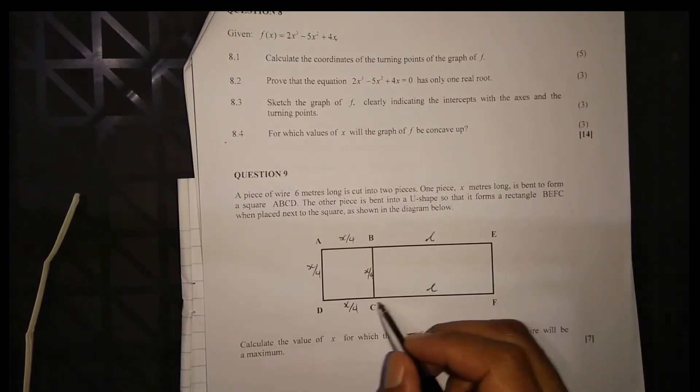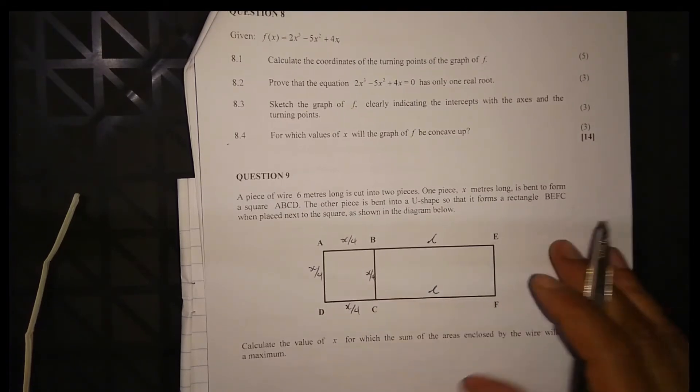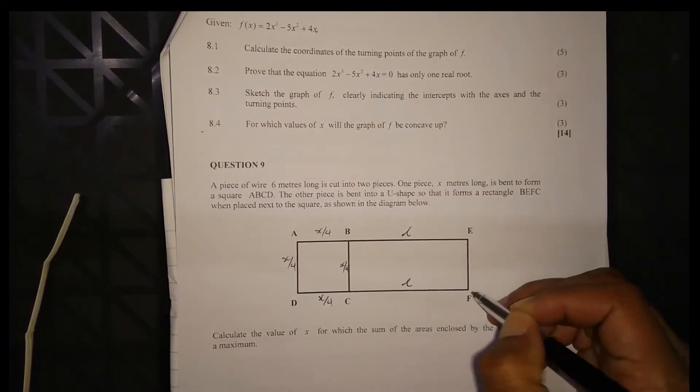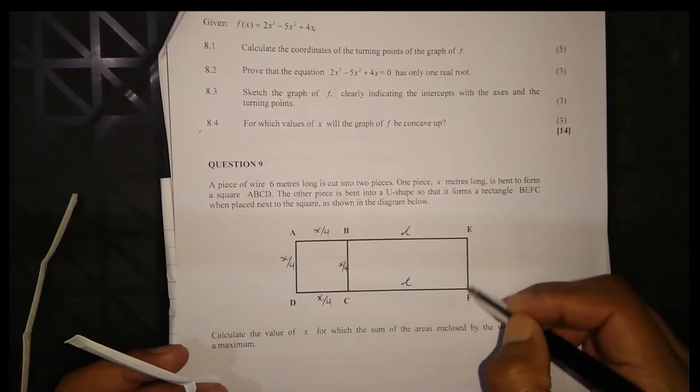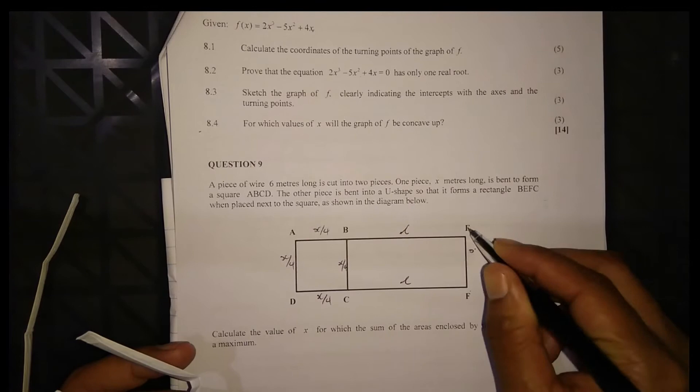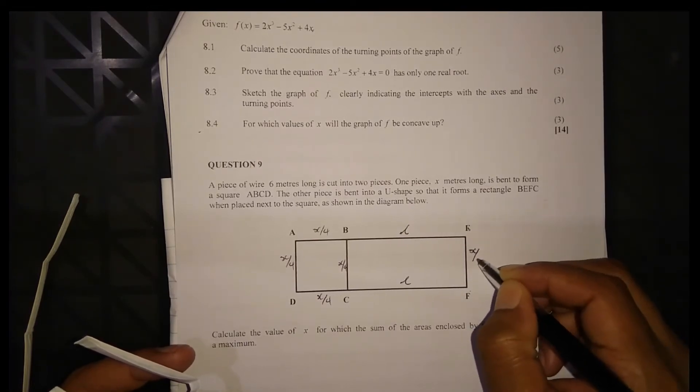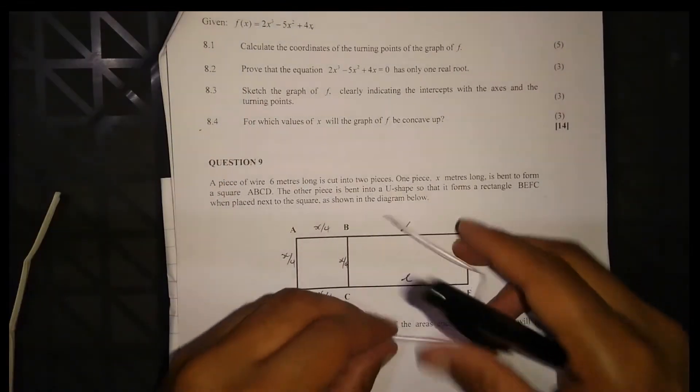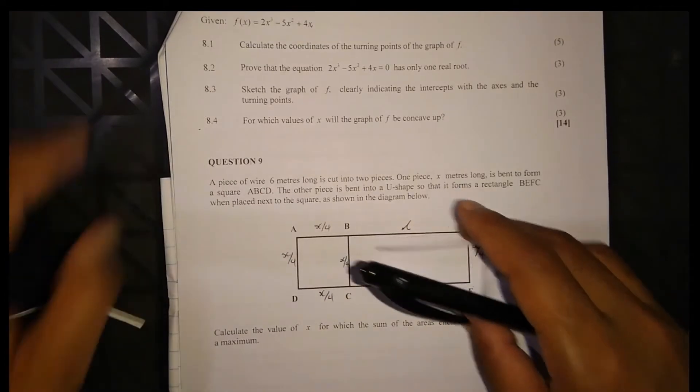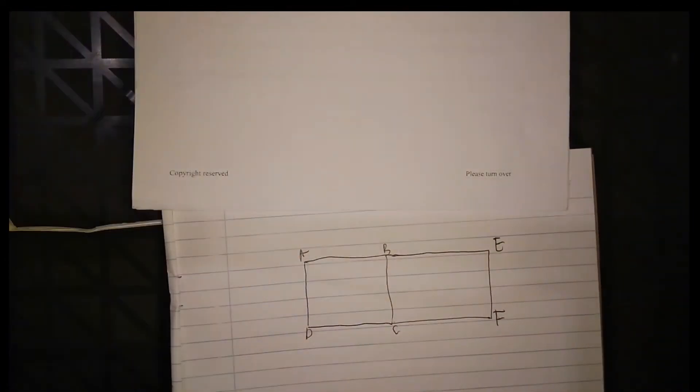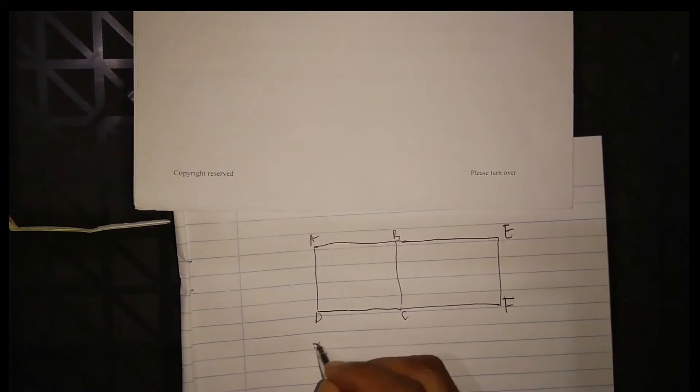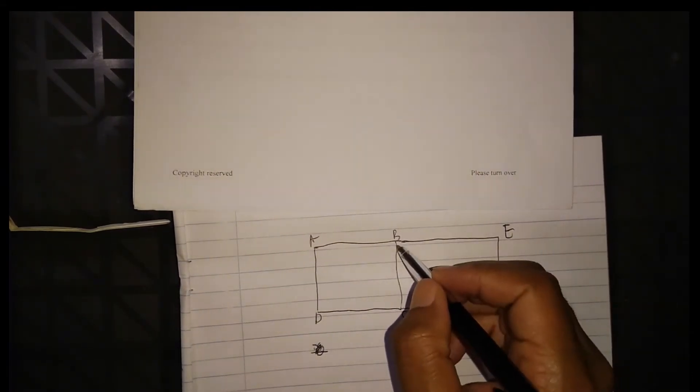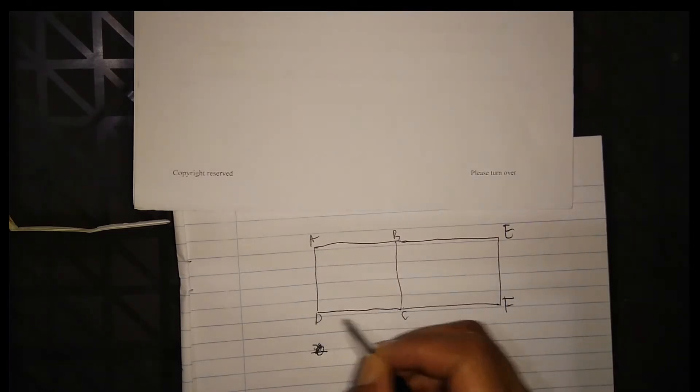Now let's label this U shape. This is the length, which is the longest side. This side and this side are equal, so EF equals x over 4. This is the U shape, and this is the square.